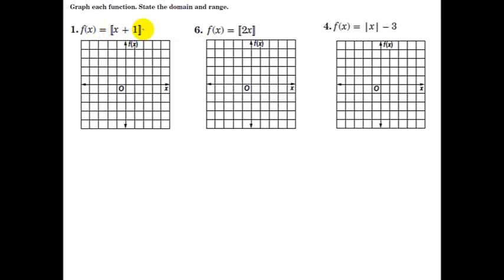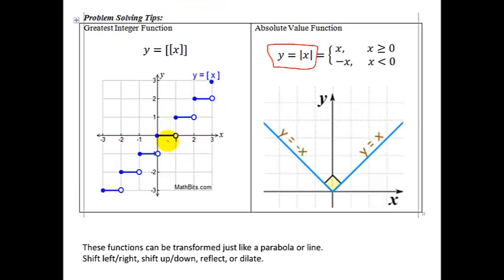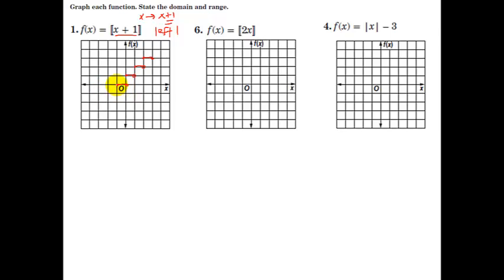For the first example, the double bracket is the round down function. An easier way to approach it is to recognize that changing x to x + 1 means we shift left 1. So we know the original function has a line segment here, and we just move it left 1 — open dot on the left, closed dot on the right. The first piece originally went from 0 to 1, so after moving left 1, it goes from negative 1 to 0. Then we plot the rest of the staircase function from there.